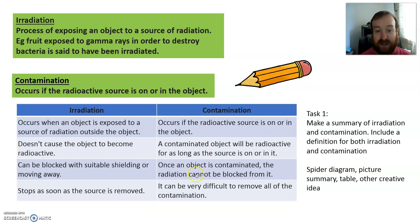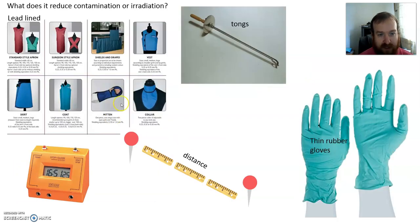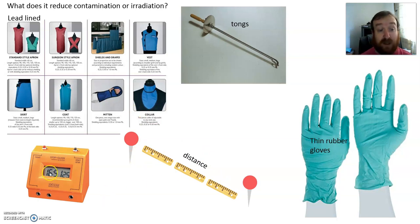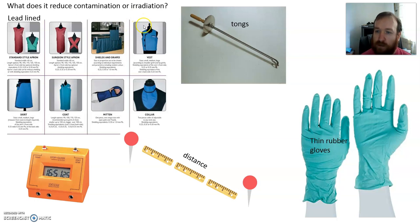Hopefully you've got that summary finished. If not, pause the video and keep doing it — 10 minutes or so. Moving on. I've got some different radiation safety equipment: some lead-lined clothing, some tongs, some thin rubber gloves, some distance — I've got a ruler to represent that — and a stop clock. This is all radiation protection equipment. I want you to think about which ones reduce contamination, irradiation, or both.